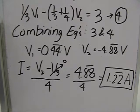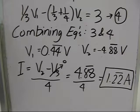Now, we can solve for I, which is V2 minus V3 over 4. Since node three is our reference point, V3 is zero. Therefore, I equals 4.88 over 4 equals 1.22 amperes.